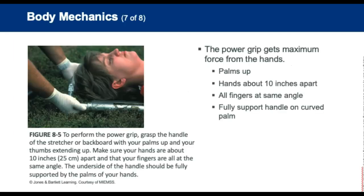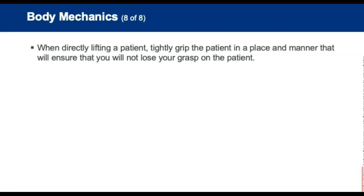Use the power grip to get maximum force from your hands when lifting. The power grip means palms are up and thumbs extend upward. Hands are about 10 inches apart and all fingers are at the same angle. Fingers and thumb are curled tightly over the top of the handle, fully supporting the handle with your curved palm. When directly lifting the patient, tightly grip in a place and manner that ensures you will not lose your grip.